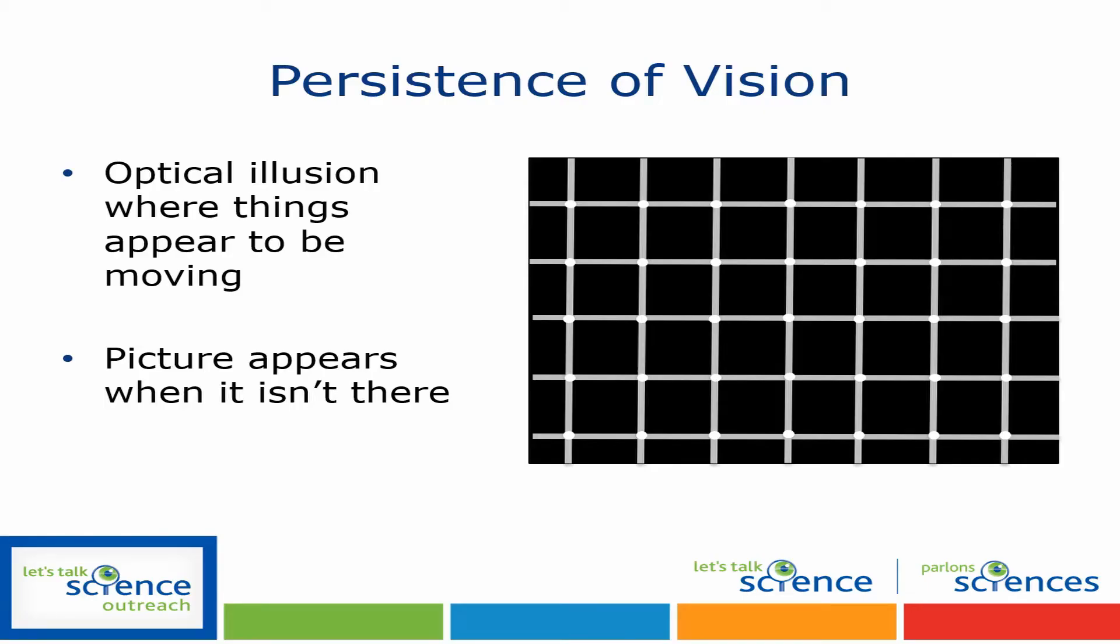Today we're actually going to be doing two experiments, but both experiments use something known as the persistence of vision. So the persistence of vision is an optical illusion where things appear to be moving, or an image appears, but it actually isn't there.